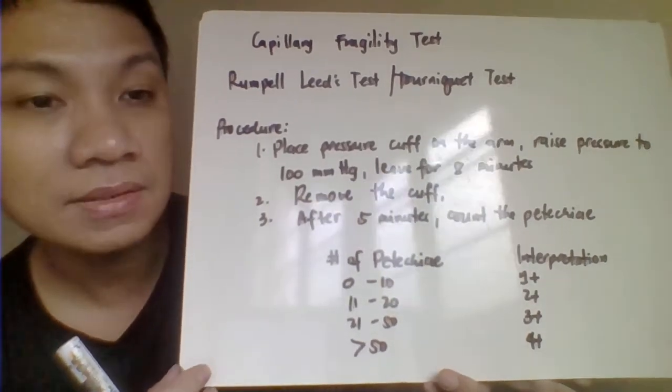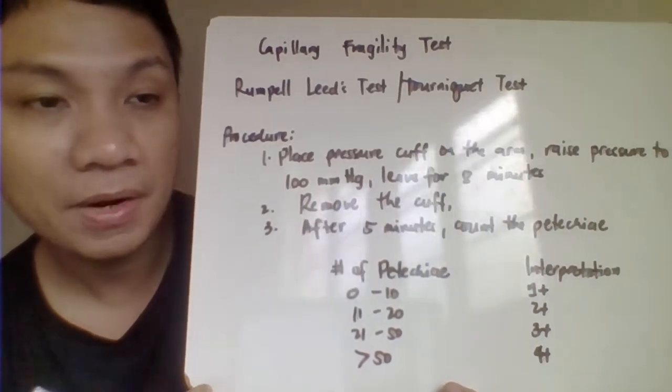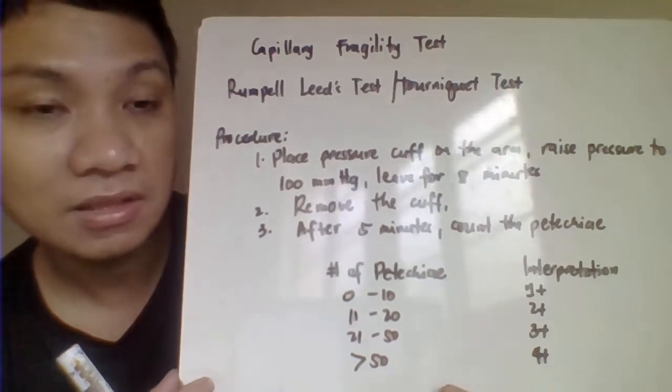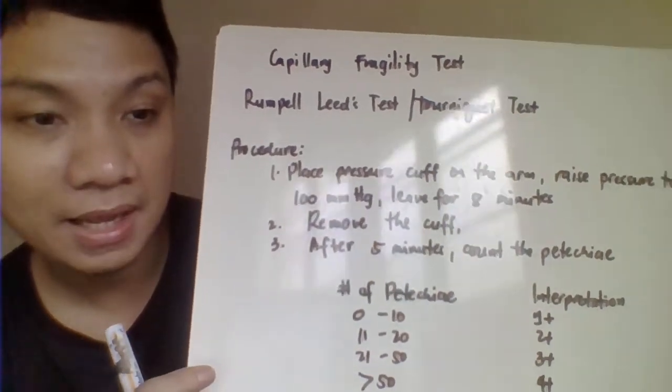After 8 minutes, remove the pressure cuff, and then after 5 minutes, count the number of petechiae. Do not count in the area where you applied the pressure cuff — count the petechiae below that area. To make counting easier, you can circle them.